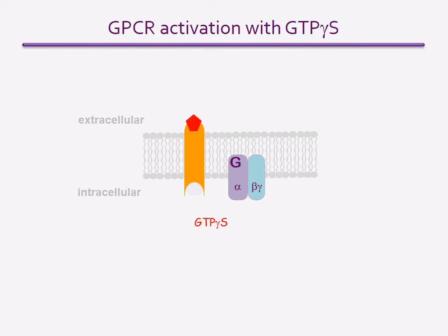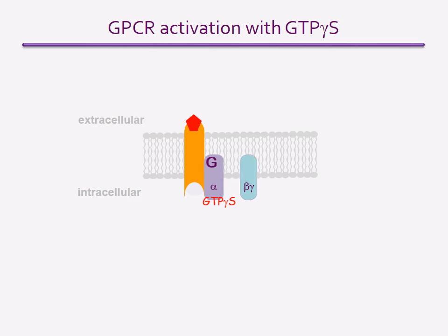If agonist activation of a G protein coupled receptor is carried out in homogenated tissues, cells or cell membranes, it is possible to alter the conditions around the cytosolic side of the receptor. The GTP can be replaced with a non-hydrolyzable form of GTP — GTP gamma-S. When the receptor is activated, the GTP gamma-S binds to the G protein but cannot be hydrolyzed, so it stays bound and the G protein is permanently activated. The more the agonist binds to the receptor, the more GTP gamma-S binds. Since the sulfur can be substituted by sulfur-35, the amount of GTP gamma-S bound can be measured by scintillation counting of the radioactivity.